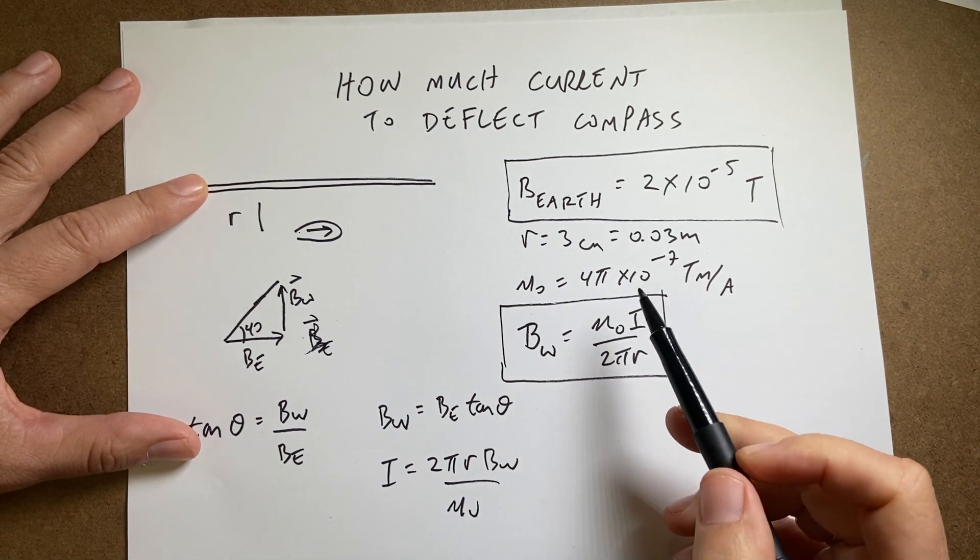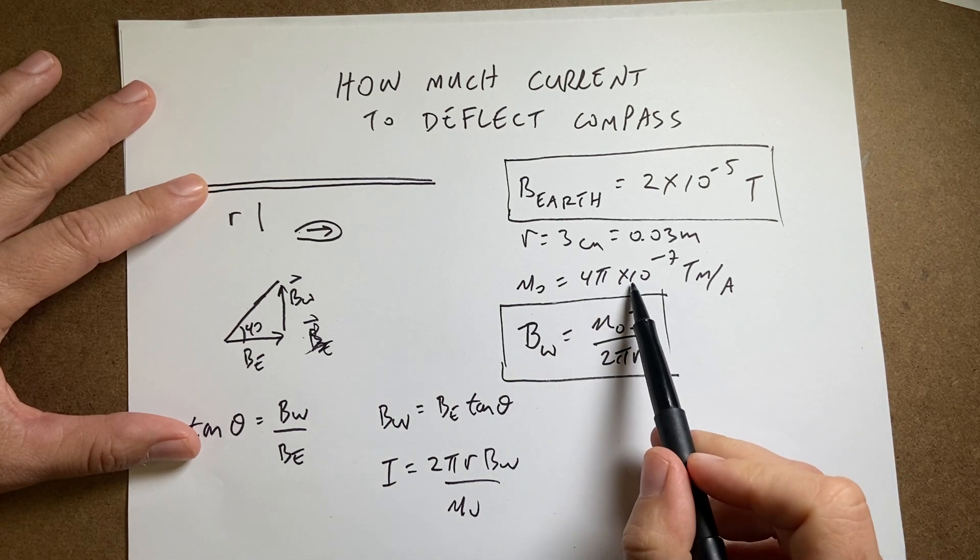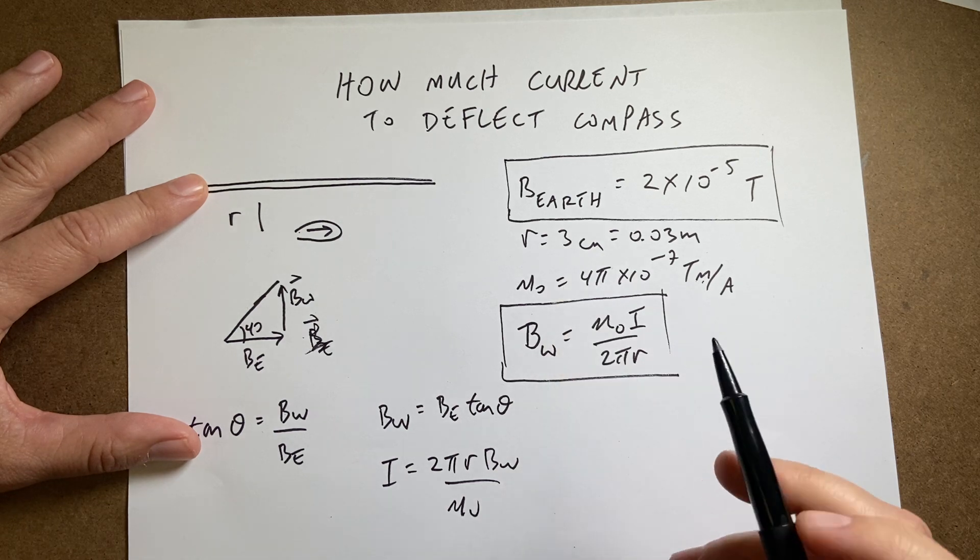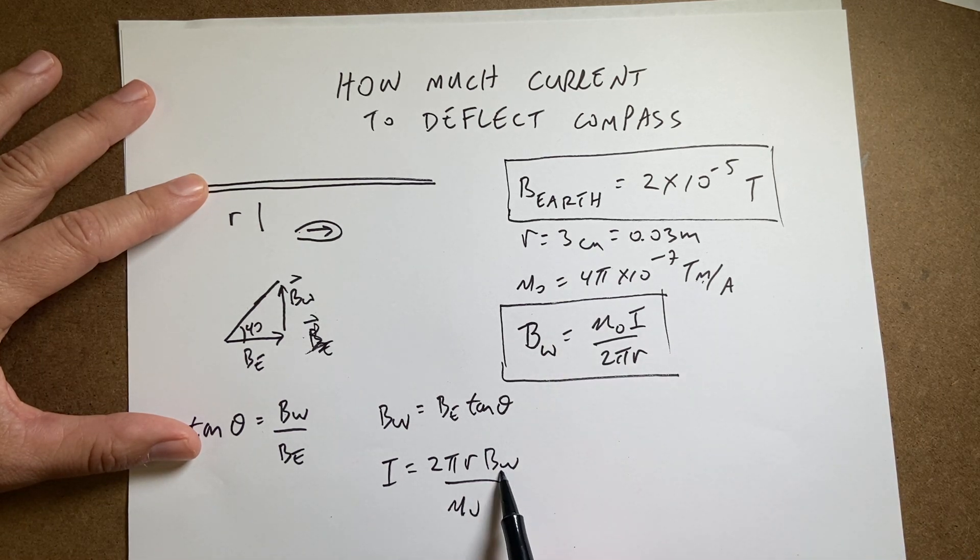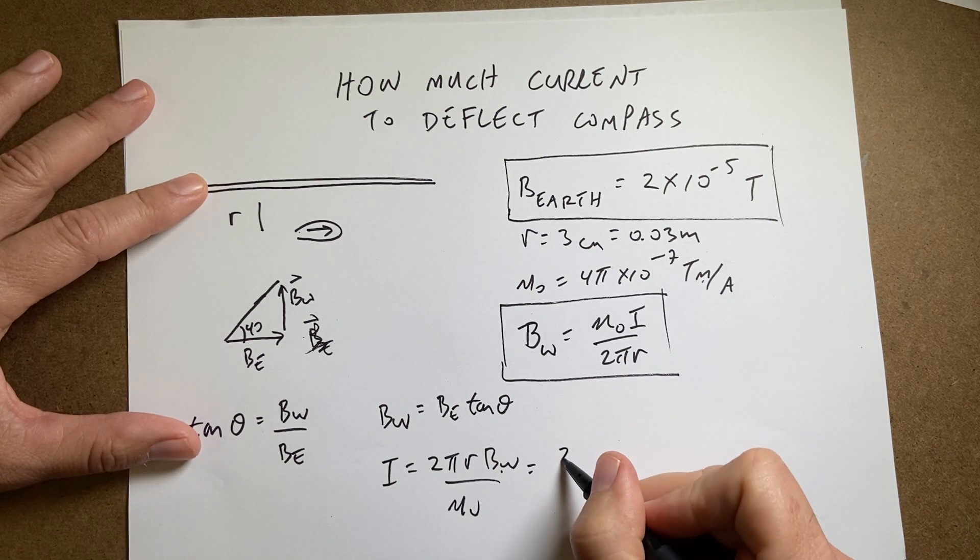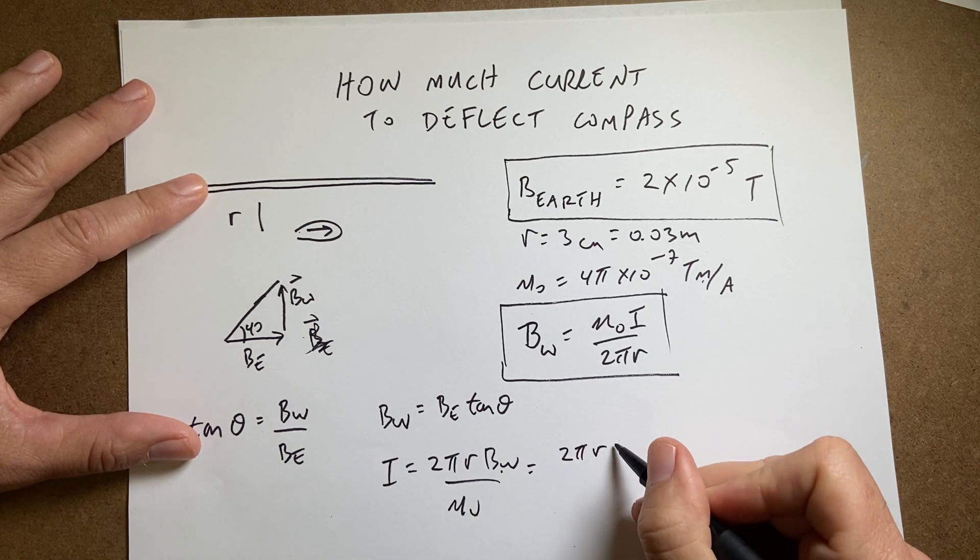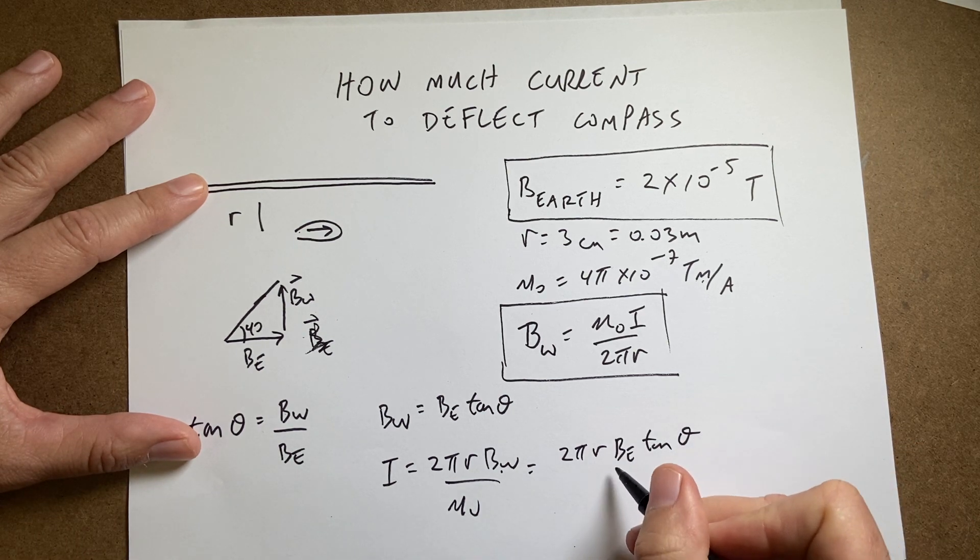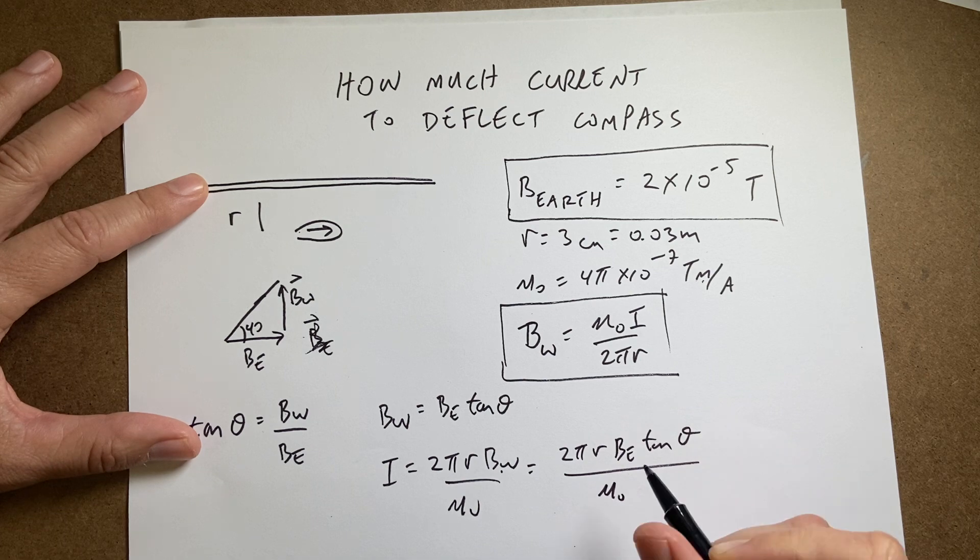and remember mu naught is the magnetic constant. It's 4 pi times 10 to the negative 7 tesla meters per amp, and that's why you have to convert that to meters. And then if I put in my expression for the magnitude of the magnetic field, I get 2 pi r B earth tangent theta over mu naught, and that will give me my current.